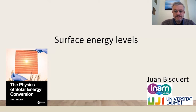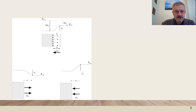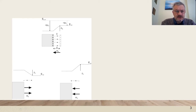The surface energy levels. We will discuss the effect of a surface dipole and how it modifies the energy levels. A dipole is a separation of positive and negative charge that induces an internal electrical field, and this is of molecular or atomic size, a few nanometers. This field introduces a step of the vacuum level so that the internal levels of the solid will come down or up.